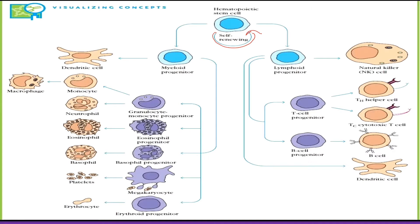There are two types of progenitor cells. One is the myeloid progenitor and one is the lymphoid progenitor. Myeloid progenitor gives rise to WBC and RBC. Lymphoid progenitor gives rise to different types of lymph cells, called lymphoid progenitors.